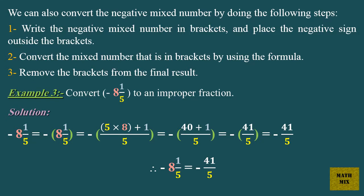We can also convert the negative mixed number by doing the following steps. Step 1: write the negative mixed number in brackets and place the negative sign outside the brackets. Step 2: convert the mixed number that is in brackets by using the formula. Step 3: remove the brackets from the final result.